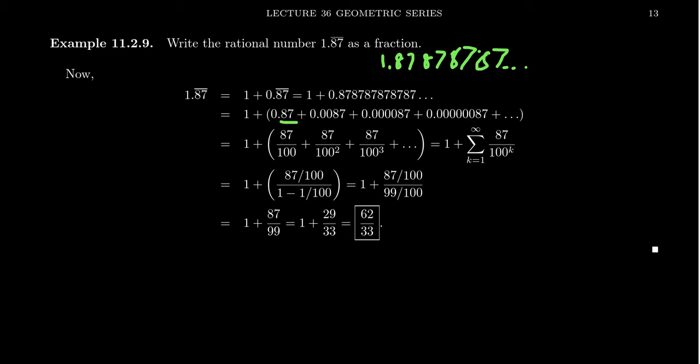Each of these are terminating decimals. That is, they stop after a while and we can express them. You take the number here, it's always 87 on top, but then you get powers of 100.